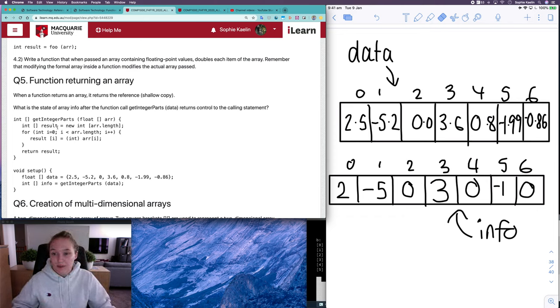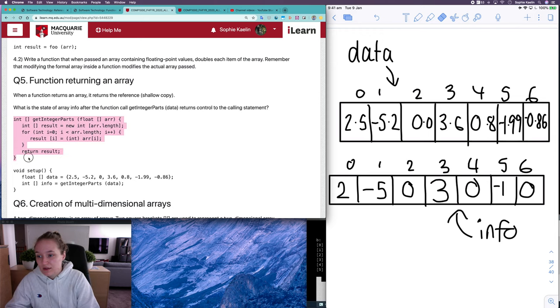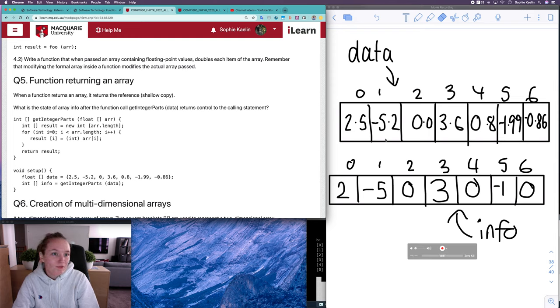So once all of this code has been executed, this is what your memory diagram should look like. We have no traces of what was done in the function. All we have is two arrays, a float array called data, an integer array called info. Data has a bunch of float values and info has those same values, but rounded down, not to the closest integer, rounded down, to this int value here. So that is what the memory diagram for question five will look like.